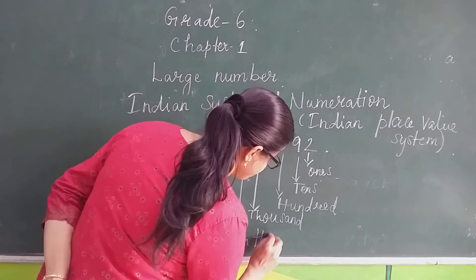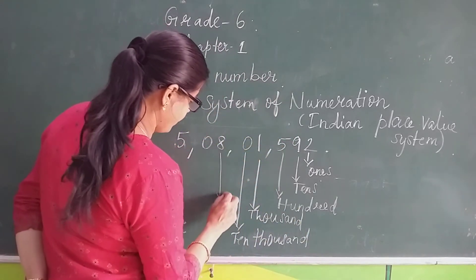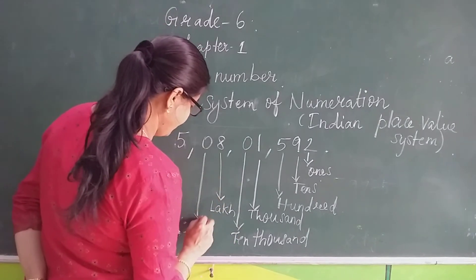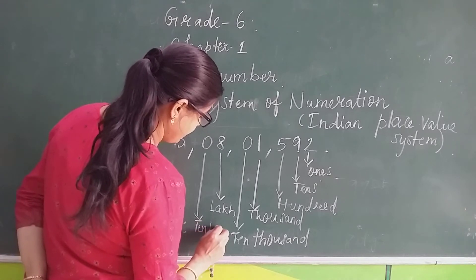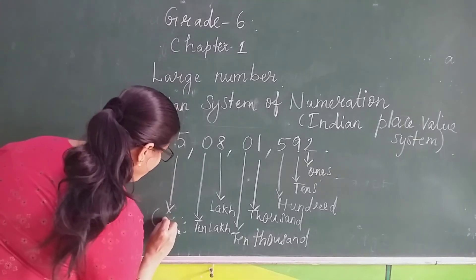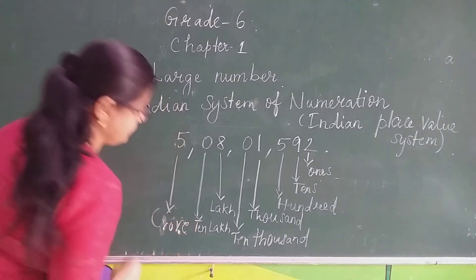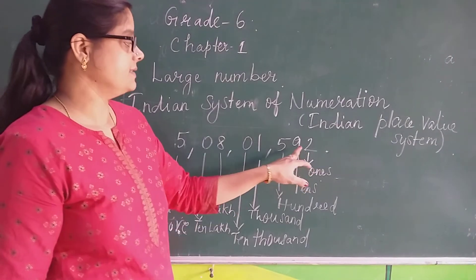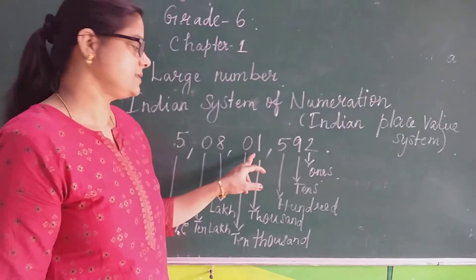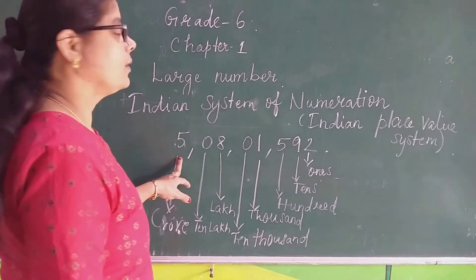This digit is in the ten thousands place. And this one is in the lakhs place. And this is in the ten lakhs place. And this is in the crore place. So the places are: ones, tens, hundreds, thousands, ten thousands, lakhs, ten lakhs, and crore.